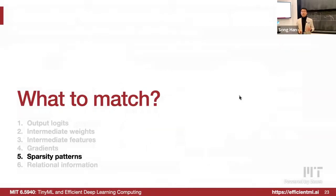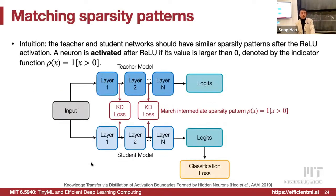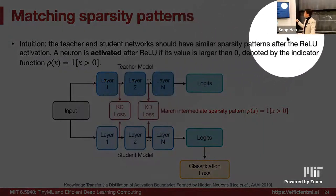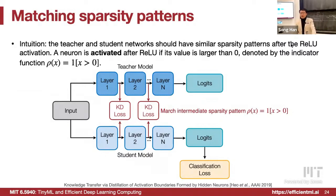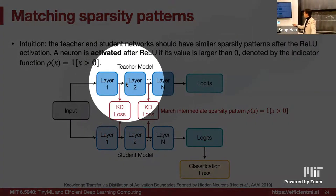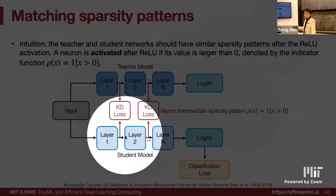Any questions so far? We talked about matching the weight, feature, gradient, and output. We can also match the sparsity pattern. Where does sparsity come from? Usually from the ReLU activation function. We want to match the sparsity pattern after the ReLU activation function — a neuron is activated if it is larger than zero; otherwise it becomes zero. At every feature map, we try to match the teacher's sparsity pattern versus the student's sparsity pattern.